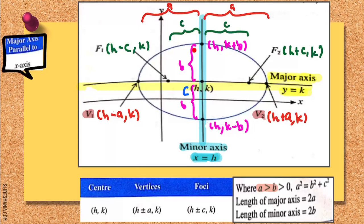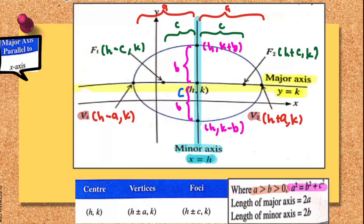We can see clearly that the distance a is larger than distance b, and both must be greater than zero. There is a Pythagorean theorem here: a squared equals b squared plus c squared. So a is the largest value and is the hypotenuse. We will use this formula to calculate the values of a, b, or c for an ellipse with major axis parallel to the x-axis.